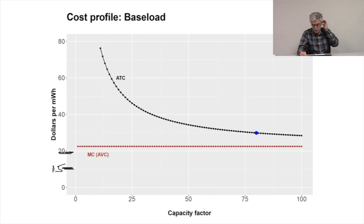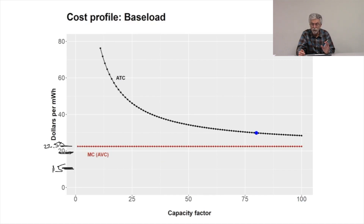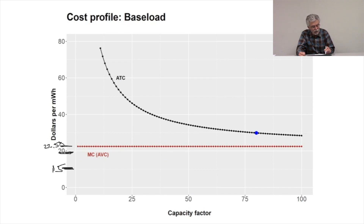Let's suppose the offer goes all the way up to $22.50. Now the contract offer is precisely equal to the fuel cost of operating the power plant. So we make precisely nothing from each megawatt hour of power we produce. It doesn't hurt you to run the plant, but it doesn't help you either.